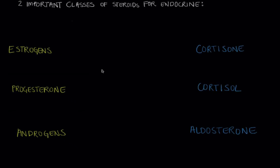And so I mentioned before that there are two important classes of steroid hormones in the body and those are the sex hormones and the adrenal cortex steroids.